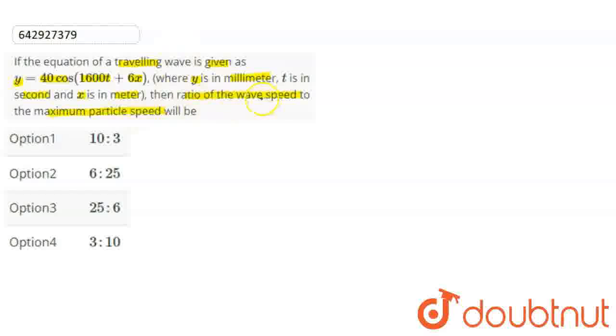So in the equation, we have amplitude A which is 40. Now, y is in millimeters, so this is 0.040 meter.